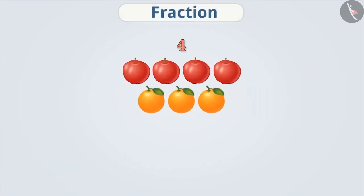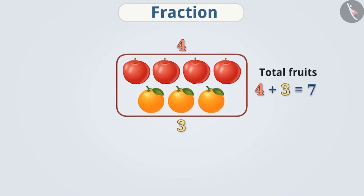There are four apples and three oranges. Therefore, the total number of fruits here is seven. If we have to find the fraction of apples in the total number of fruits, then how do we do it?